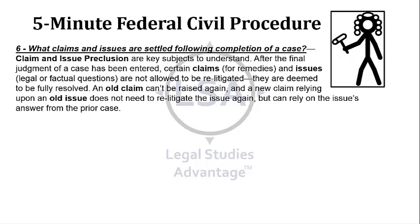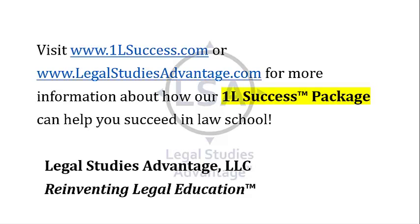What claims and issues are settled following completion of a case? Claim and issue preclusion are key subjects to understand here. After the final judgment of the case has been entered, certain claims for remedies and issues — legal or factual questions — are not allowed to be re-litigated. They are deemed to be fully resolved. An old claim can't be raised again, and a new claim relying upon an old issue does not need to re-litigate the issue, but can rely upon the issue's answer from the prior case. That concludes our brief overview to the subject of civil procedure.